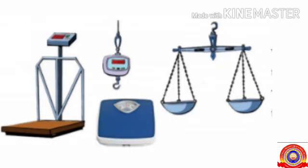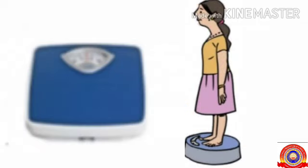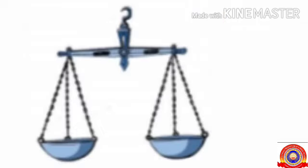Children, see these pictures. Have you seen all these? What is the use of all these? By using these we can measure the weight of things. Which of these can be used to find your weight? By using these we can measure our weight. Usually we use this type of common balance to measure the weight of things. We use this to compare two objects.